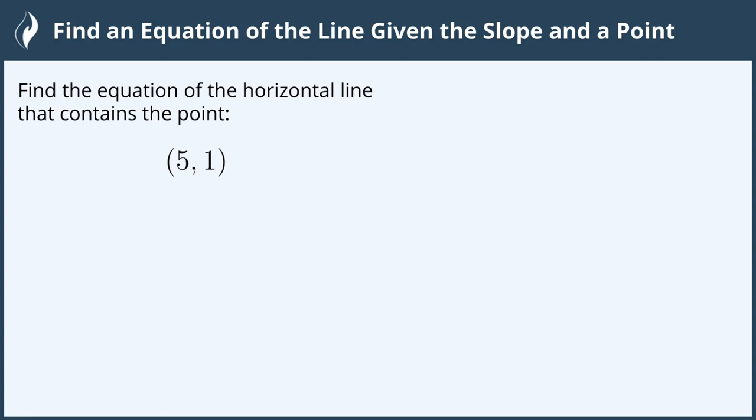A horizontal line is one that lays flat from left to right, and this has a slope of zero.